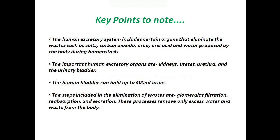Finally in this video, we will look at the key points to note. The human excretory system includes certain organs that eliminate wastes such as salts, carbon dioxide, urea, uric acid, and water produced by the body during homeostasis. The important human excretory organs are kidneys, ureter, urethra, and the urinary bladder. The human bladder can hold up to 400 ml of urine.